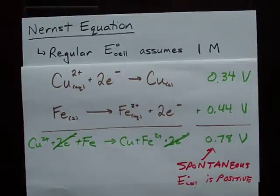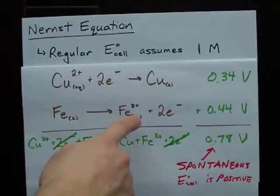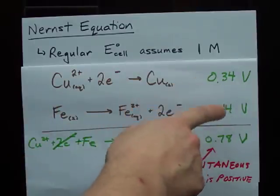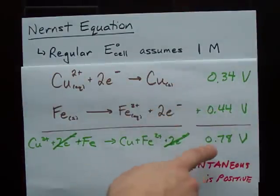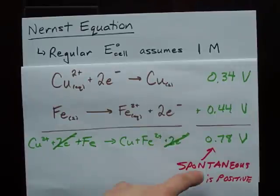All right, guys, remember when we did half reactions and we added the cell potential of each half reaction to get E cell? We figured out whether or not the reaction was spontaneous based on whether or not E cell was negative.